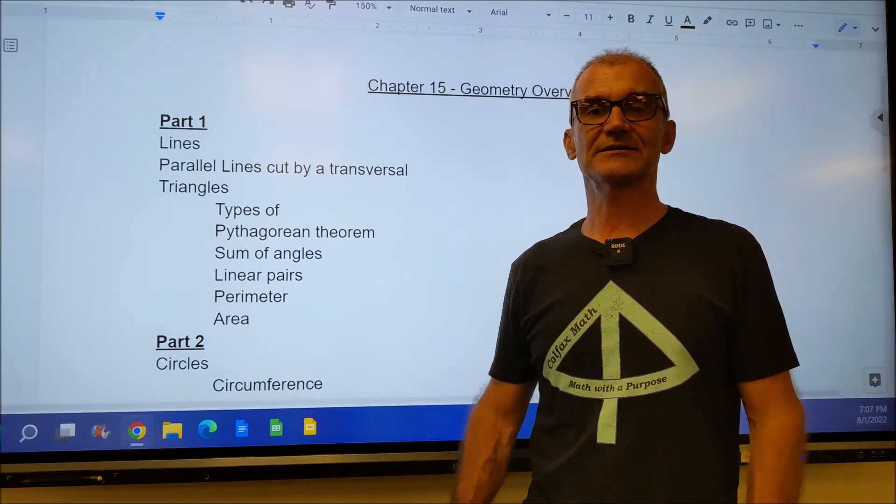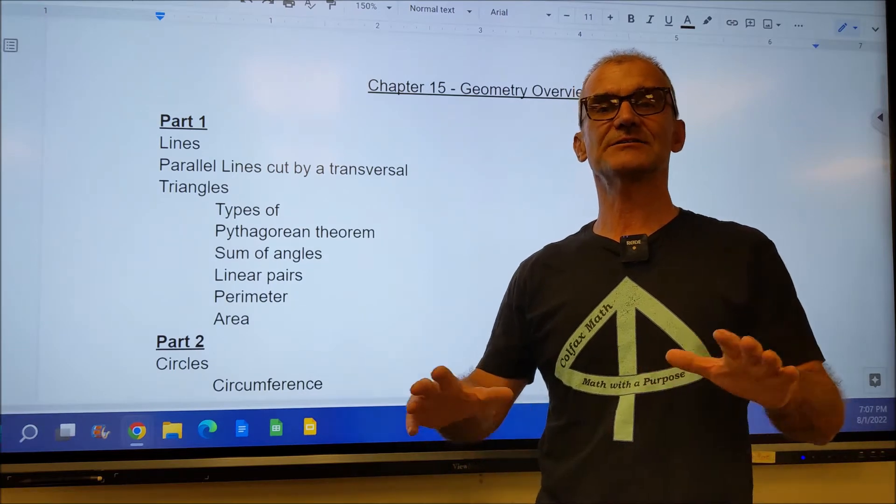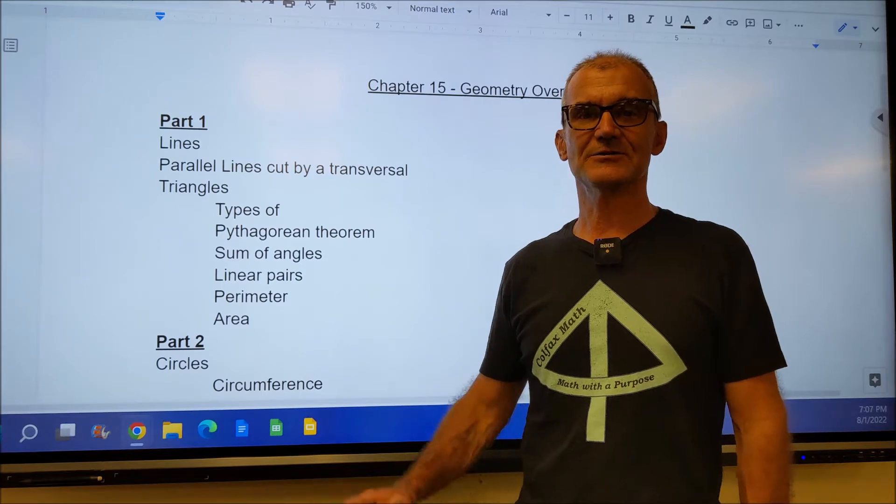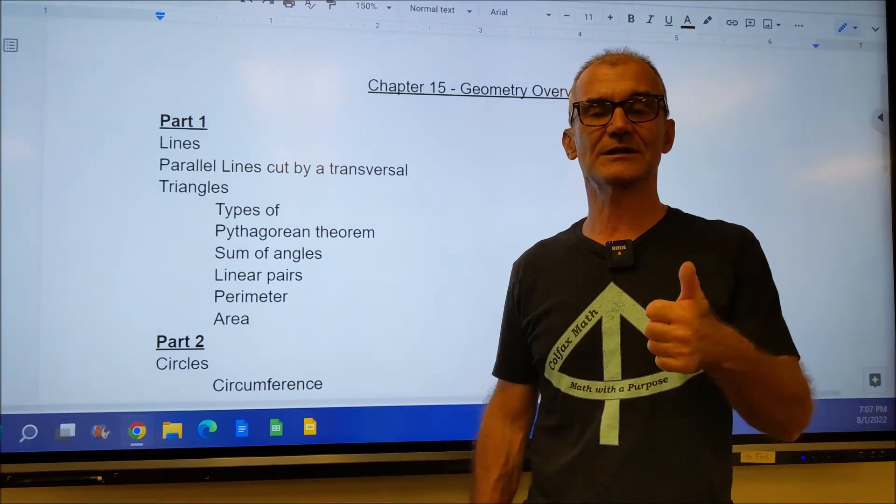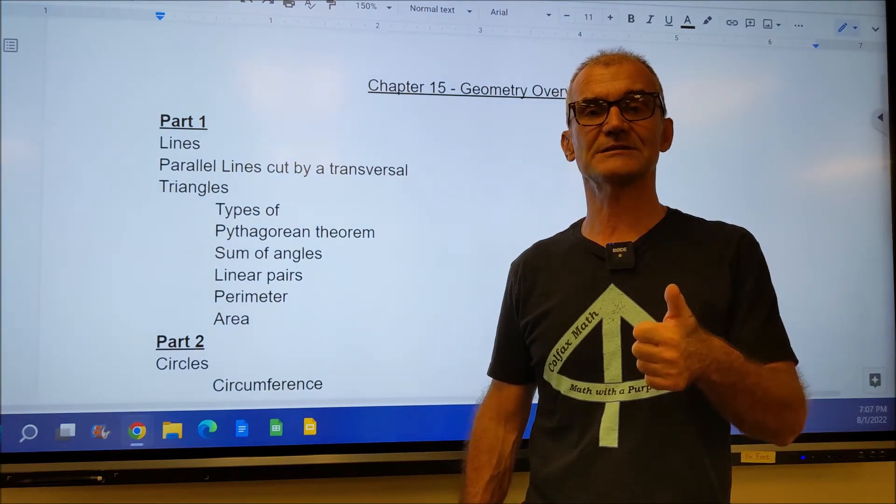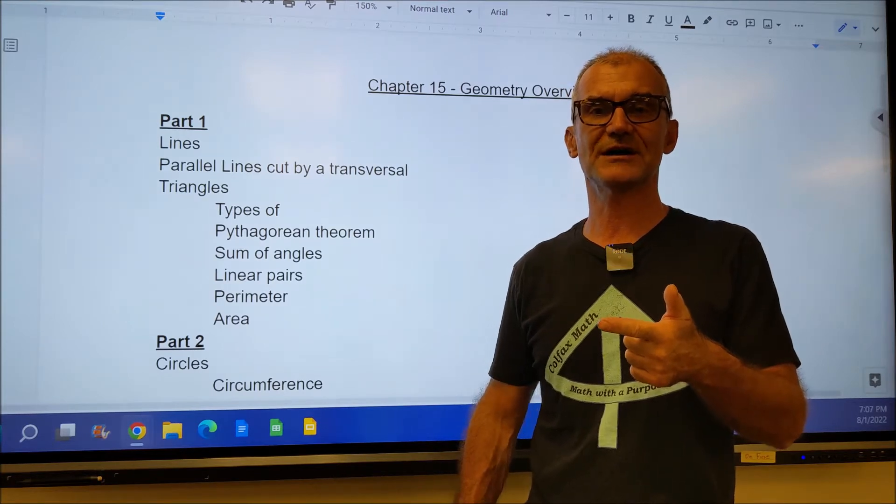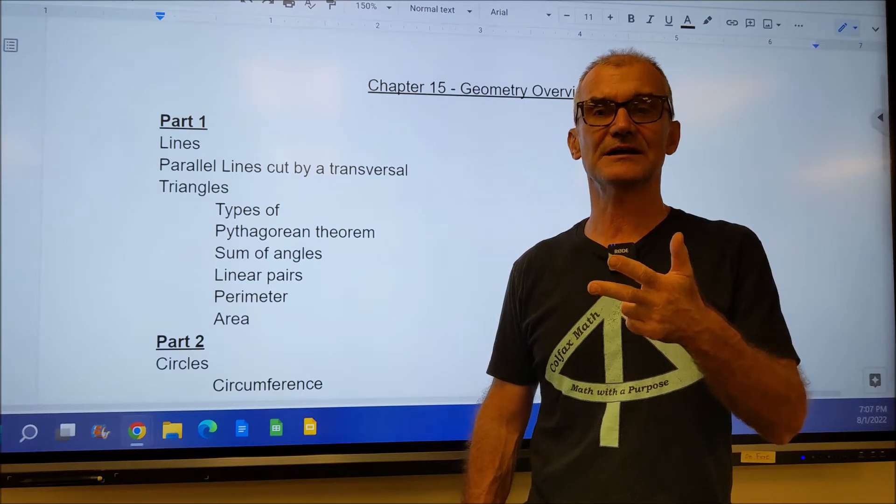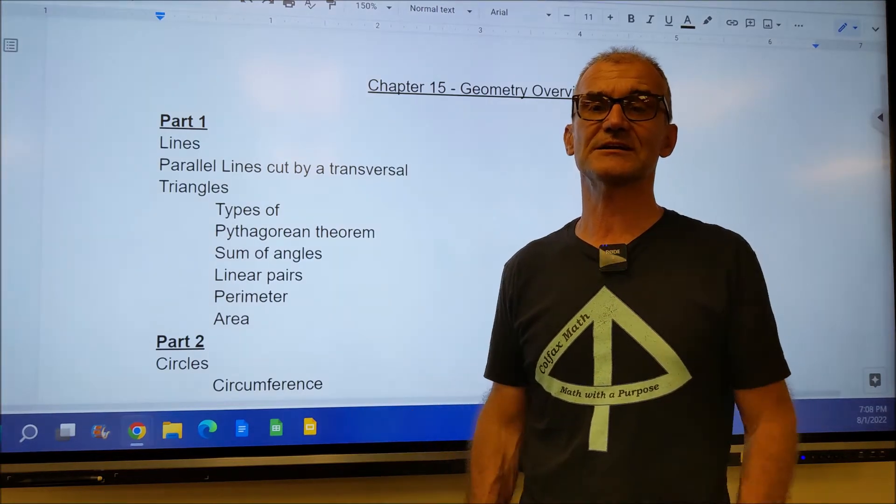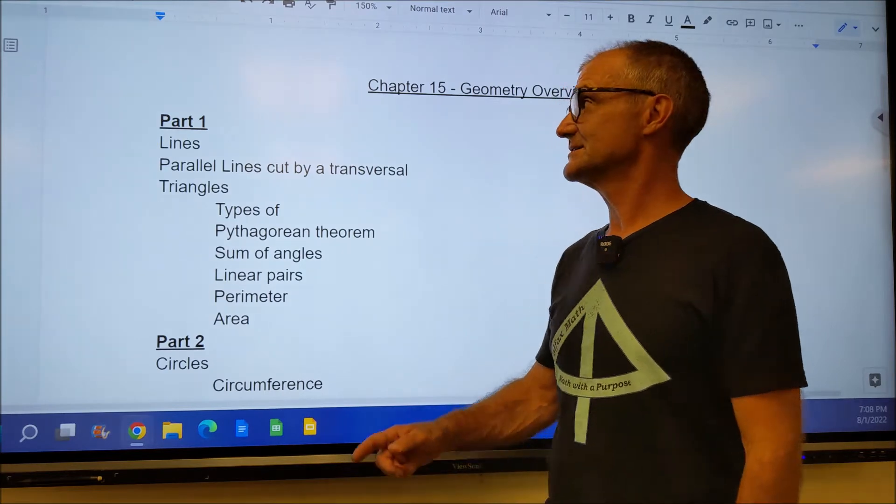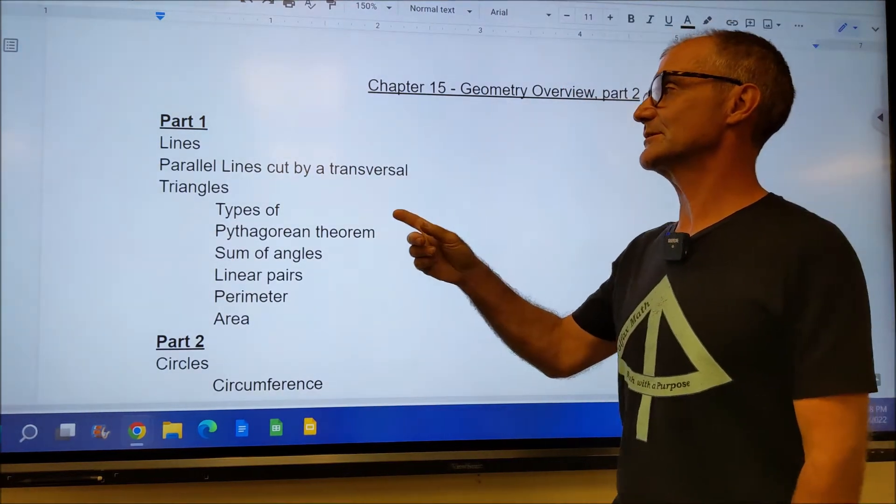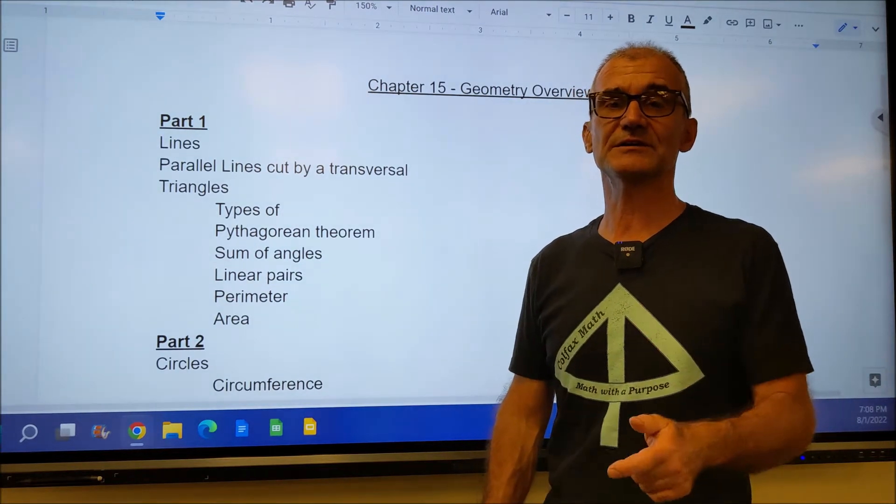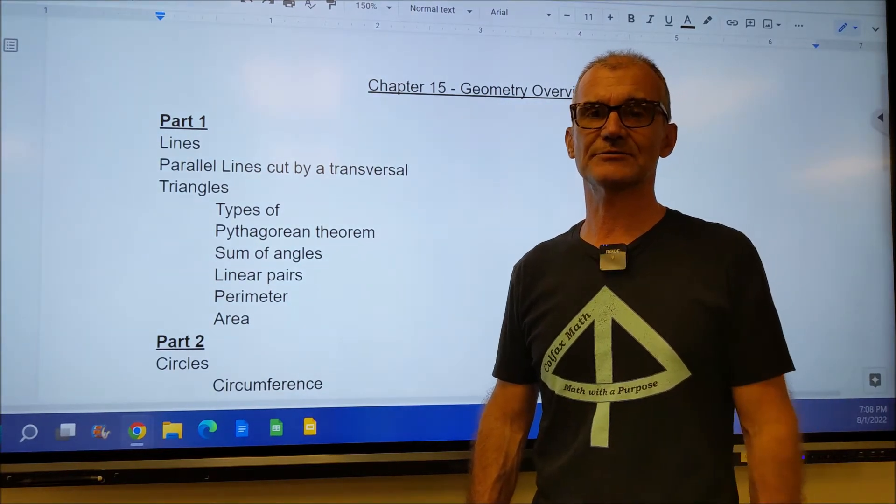This is a foundations of math course where I'm going over standardized math test taking strategies and math applications. It's designed so you do well on the ASVAB arithmetic reasoning and mathematical knowledge portions, also for any union math entry exams, contractors exams, or any standardized math test. Chapter 14 was geometry where we went over lines, parallel lines, and triangles. This is chapter 15 where we're going to go over circles and quadrilaterals.